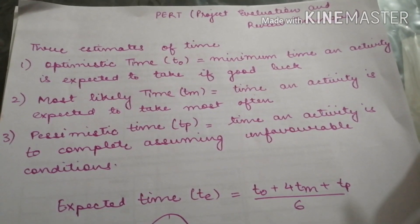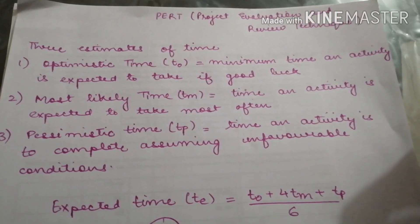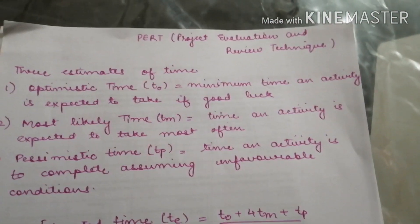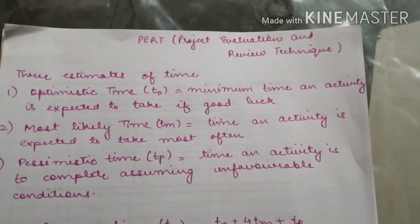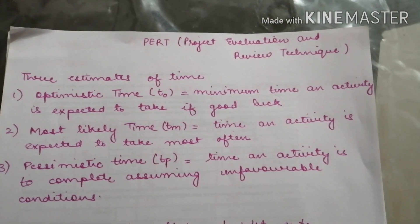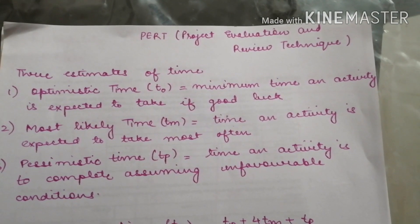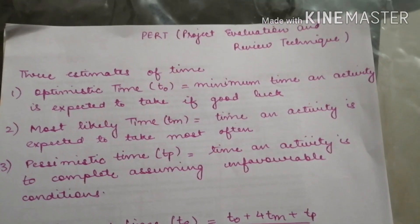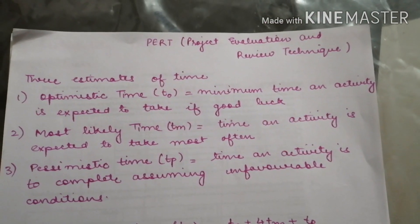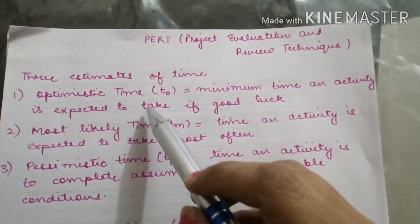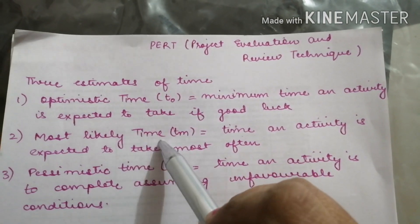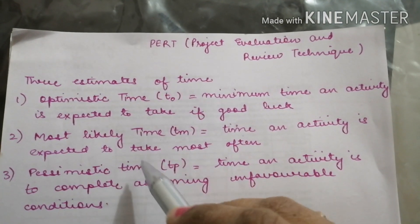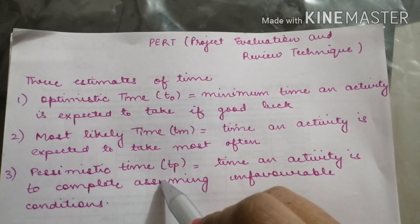Hello friends, today we will talk about PERT. PERT is Project Evaluation and Review Technique. In this, we consider three time periods: optimistic time, most likely time, and pessimistic time.